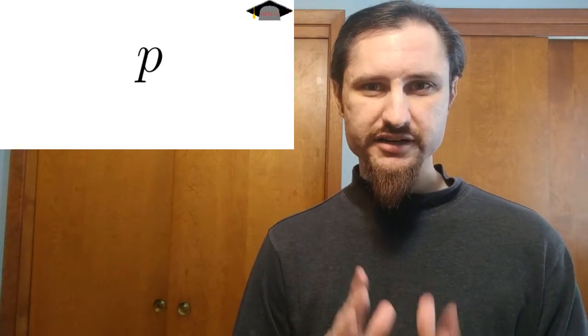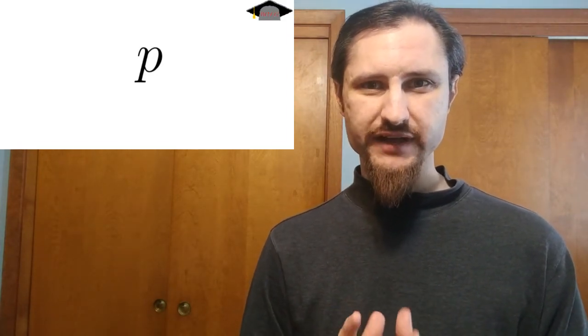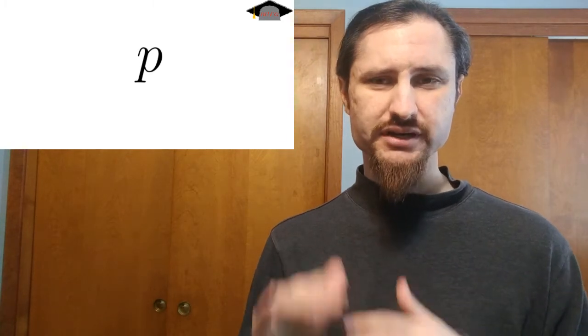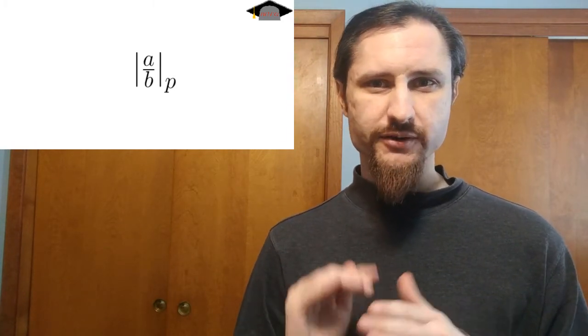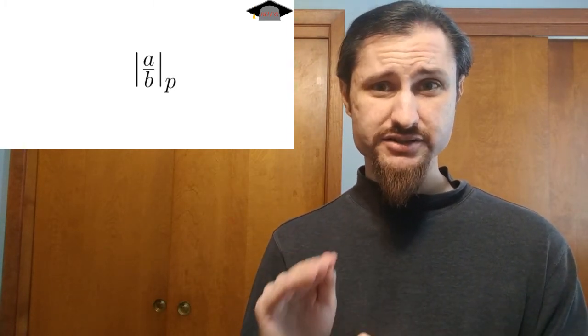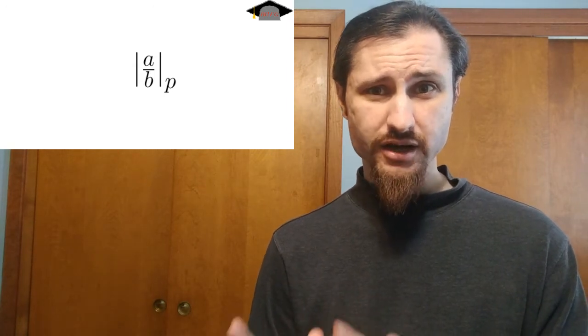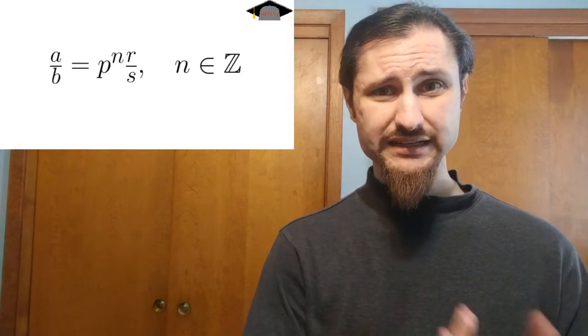And here's how that works. So first, pick your favorite prime number and call that number P. We're going to define the p-adic absolute value of a generic rational number A over B. So first thing you do is you take that rational number and factor all factors of that prime number P out of it.